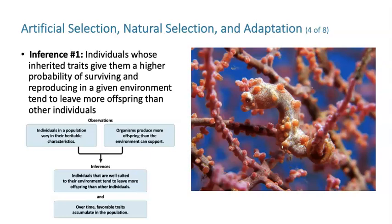Inference one: individuals who have inherited traits that give them a higher probability of surviving and reproducing in whatever environment they happen to live in tend to leave more offspring than individuals in the same environment who don't have quite the same level of favorable traits. For example, a seahorse that looks like its coral background is more likely to blend in, survive, and reproduce.